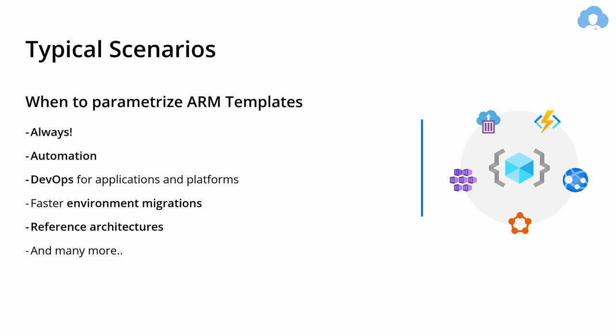What are the typical scenarios? You should always build ARM templates whenever developing in Azure. Automation is another option — you can use it for DevOps, do environment migrations, and even create reference architectures for your companies so other projects can see typical configurations for resources they should be using. It is also a great way to apply security measures and ensure the quality of your resource configuration.